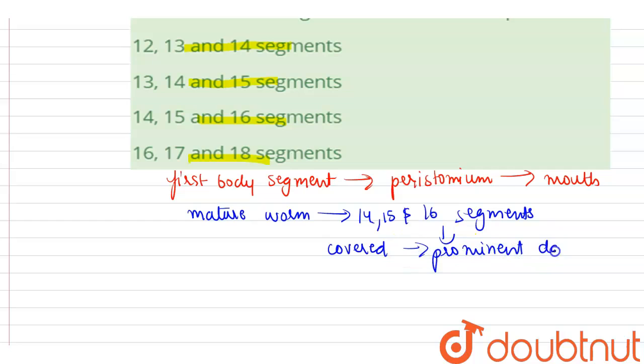This dark band of glandular tissue is called as clitellum or cingulum. And thus the body is divisible into three prominent regions: pre-clitellar, clitellar, and post-clitellar segments.